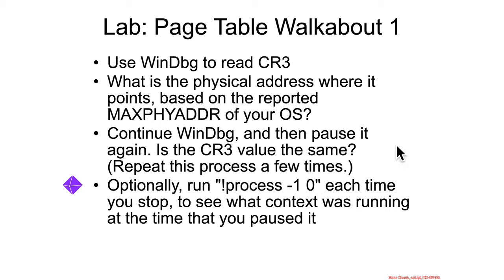Also, to get at this notion that the operating system will be swapping around page tables for different processes, go ahead and continue WinDbg, then pause, then continue and pause, and repeat it a few times. What you should see is that the CR3 value is changing. If it doesn't seem to want to change, start your VM, move around some processes so they take active focus, then break in again.